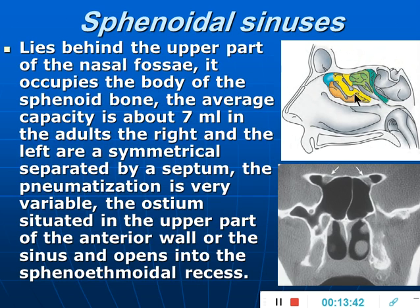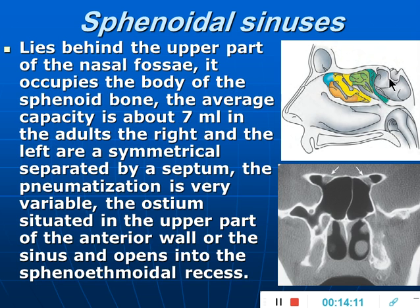The sphenoid sinus lies in the body of the sphenoid bone in the center of the skull base, behind the upper part of the nasal fossa. The average capacity is 7 to 8 cc in adults. The right and left sinuses are also asymmetrical, separated by a septum, and pneumatization is very variable. The sinus ostium is situated in the upper part of the anterior wall, and cilia push the mucus toward the natural ostium. It opens into the sphenoethmoidal recess.